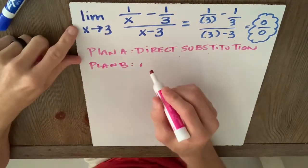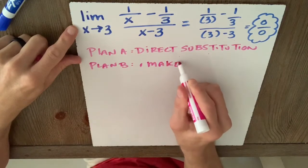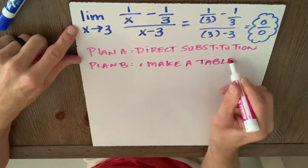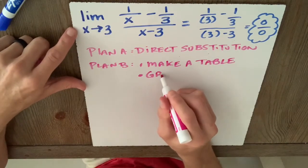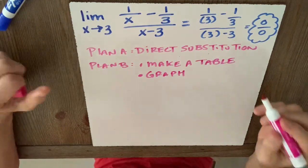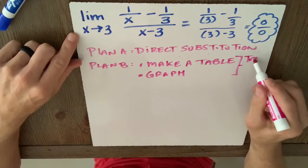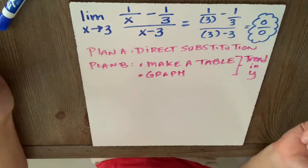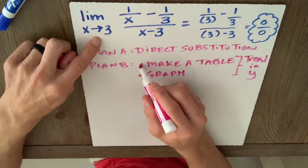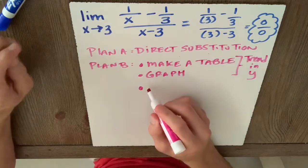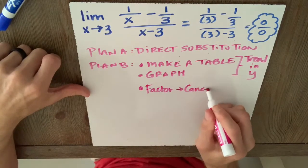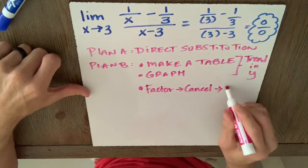One plan B would be to make a table. Another option would be to graph it. And remember, the key question is, what is the trend in y? So that's what we'll be looking for, the trend in y as we squeeze the x in this case towards 3 from both the positive and negative side. We learned also we can factor, cancel, and then use direct substitution.